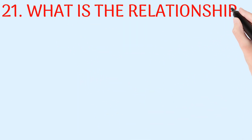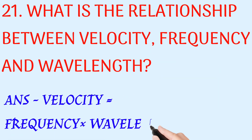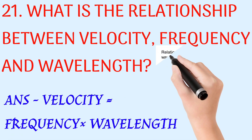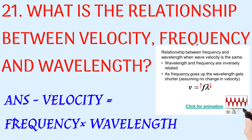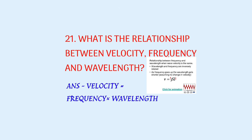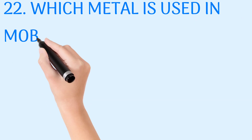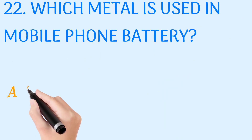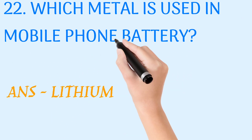What is the relationship between velocity, frequency, and wavelength? Answer: velocity equals frequency into wavelength. Which metal is used in mobile phone batteries? Answer: lithium.